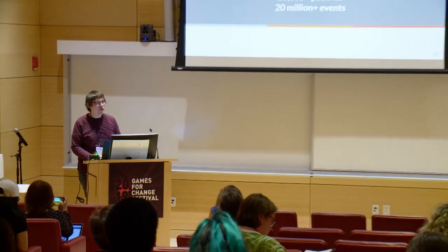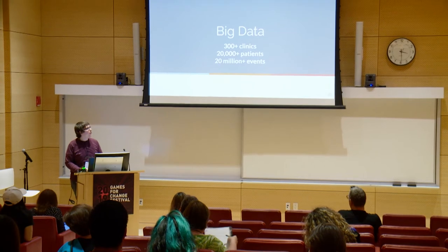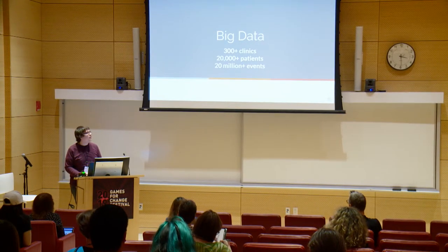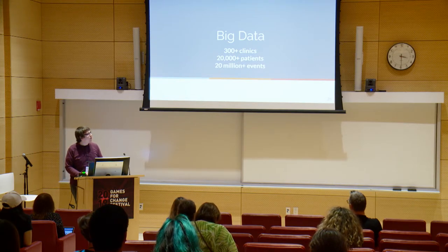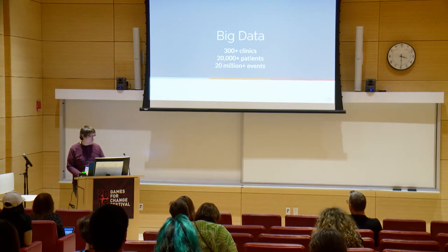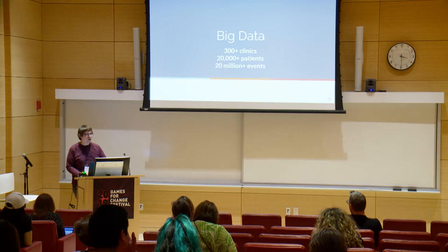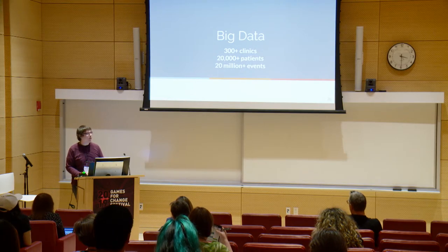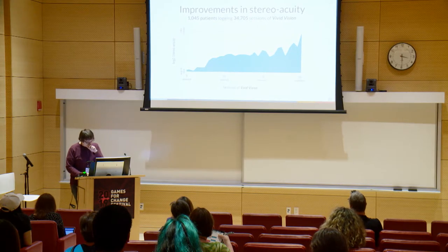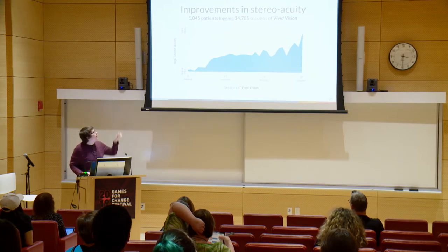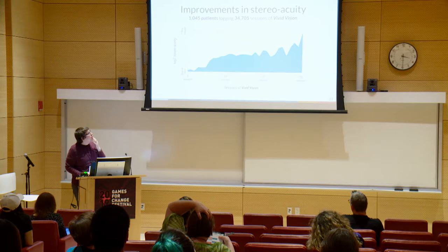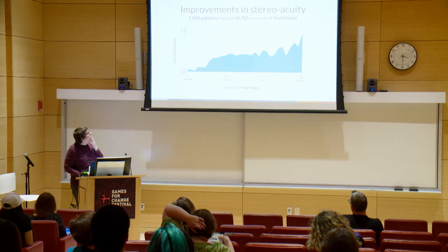Something that's really interesting to me is we have a lot of data, and we're starting to analyze it to figure out what treatments are best for which kind of patients. We have more than 300 clinics, we've treated more than 20,000 patients, and we've logged more than 20 million events in our database. We're starting to sift through that to understand which decisions or settings that the doctors are using result in the best outcomes for which patients. Here's an example of some data — we haven't published this yet.